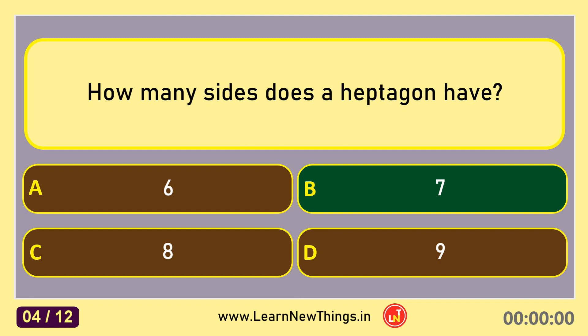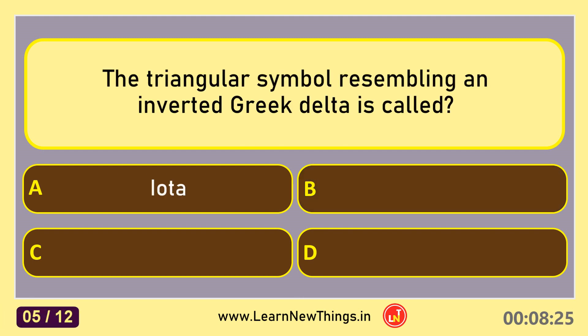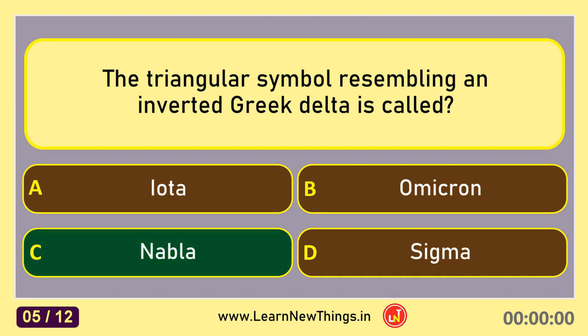The triangular symbol resembling an inverted Greek delta is called nabla.